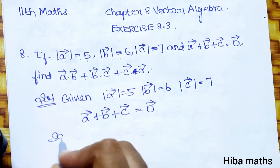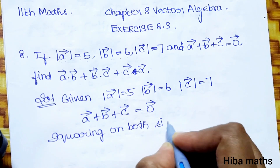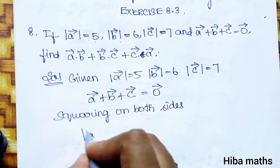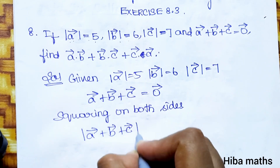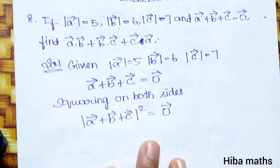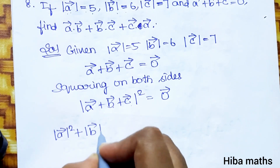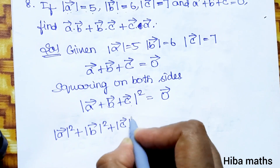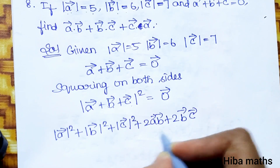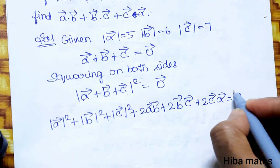Now we will square both sides. Squaring on both sides: a plus b plus c whole square is equal to zero vector squared, which equals zero. Expanding using the formula: modulus of a squared plus modulus of b squared plus modulus of c squared plus 2(a·b) plus 2(b·c) plus 2(c·a) is equal to zero.